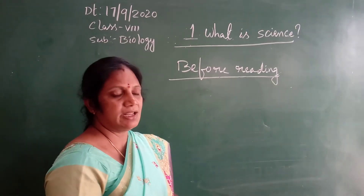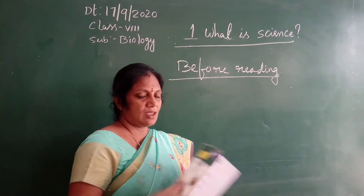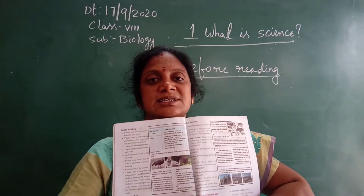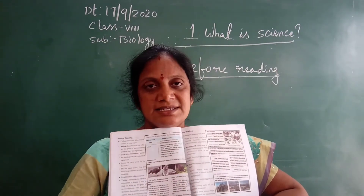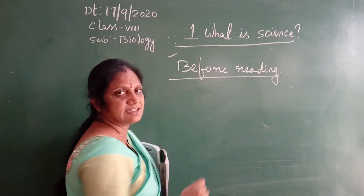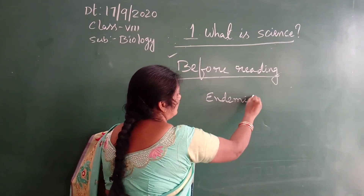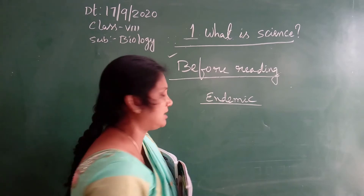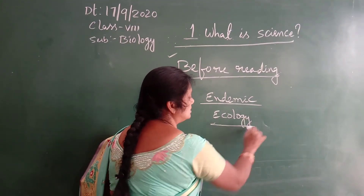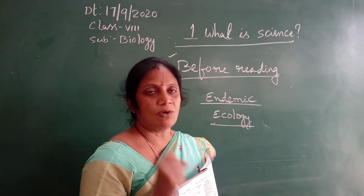For example, in your book they have given information regarding endemic species. You can see here a page — this one, observe. This is there in your sixth lesson. For your understanding I will explain 'endemic'. This is a new word for you. You don't know what is 'endemic' and what is 'ecology'. So these types of words — first you have to find out the meaning. What does it mean?